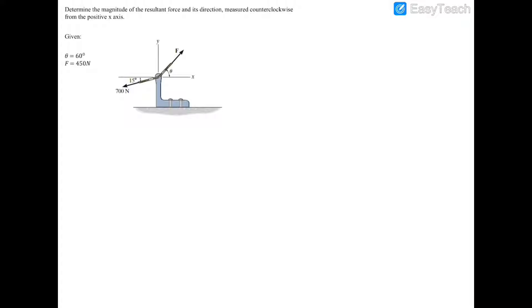We have two forces acting on a part and we're looking for the magnitude of the resultant force as well as its direction measured counterclockwise from the positive x-axis. Force F is 450 newtons at 60 degrees from the positive x-axis, and the other force is 700 newtons at 15 degrees below the negative x-axis.